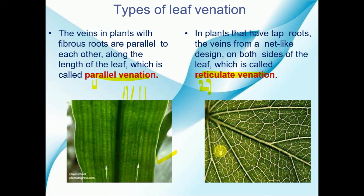There is an important relation between the kinds of roots and the types of venation. If the leaves are having parallel venation, then their roots are fibrous roots. And if the plants are having reticulate venation, then their roots are tap roots. This type of question often comes in exams — if a plant has parallel venation, what kind of roots does it have? So to summarize: parallel venation means fibrous roots, and reticulate venation means tap roots.